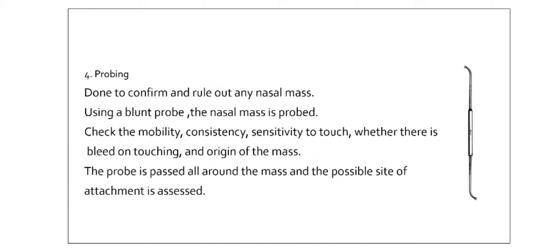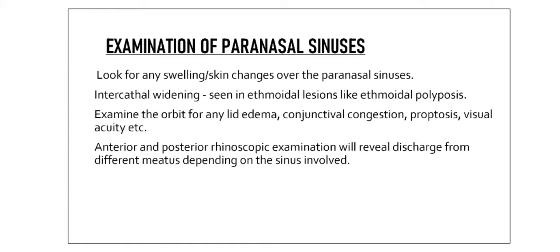Examination of the paranasal sinuses: in the inspection part, look for any swelling or skin changes over the paranasal sinuses, and also for any intercanthal widening, which is usually seen in ethmoidal lesions like ethmoidal polyposis. Also examine the orbit for any lid edema, conjunctival congestion, proptosis, and visual acuity. Through anterior and posterior rhinoscopy, if there is pus discharge from a meatus, you can identify which paranasal sinus has infection.